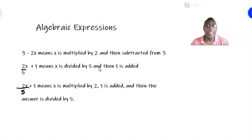The next one. Here we have 2X over 5 plus 1. It means we are dividing 2X by 5 first and then adding 1. We divide before we add.